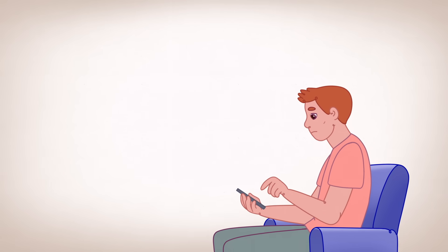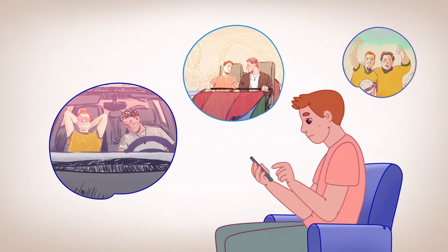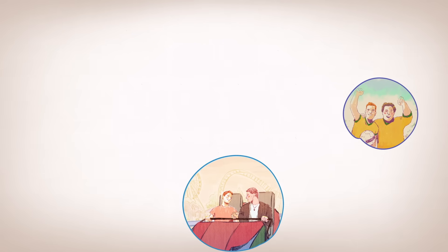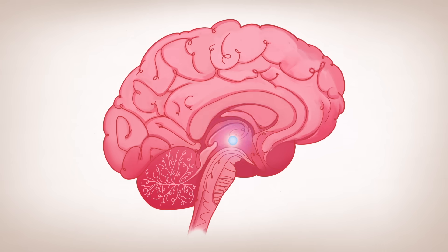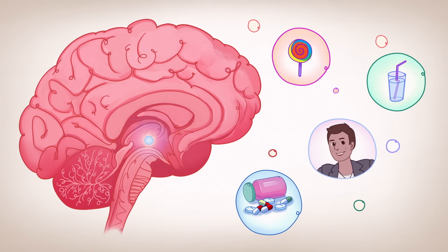When looking at photos of a former partner, heartbroken individuals again show increased activity in the VTA, the motivation and reward center that drove feelings of longing during the initial stages of the relationship.